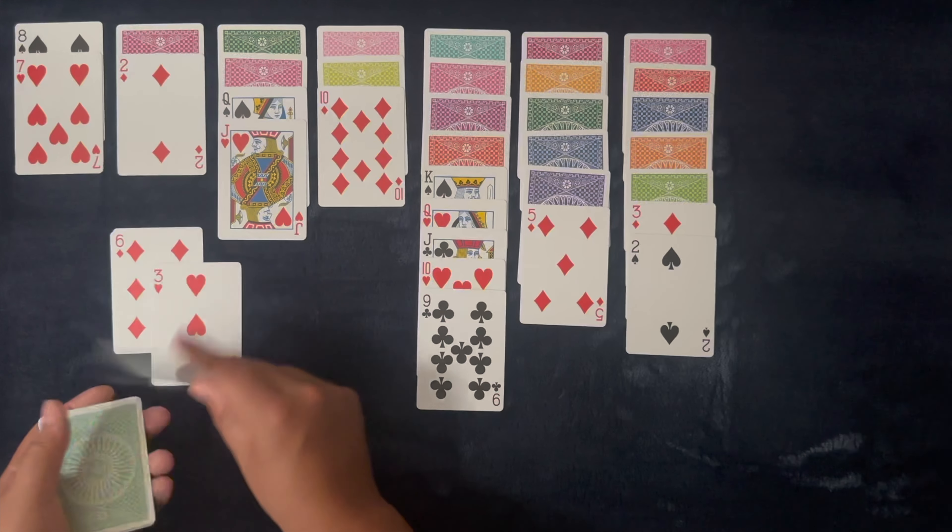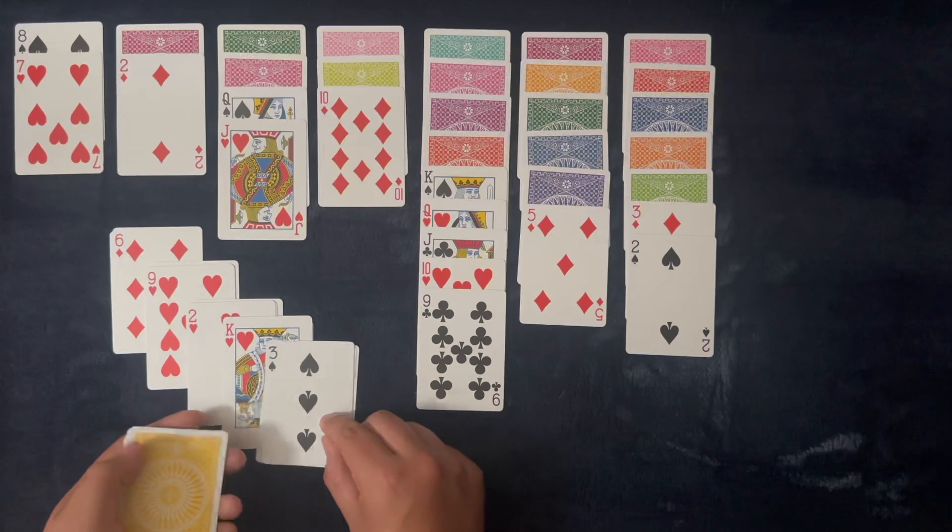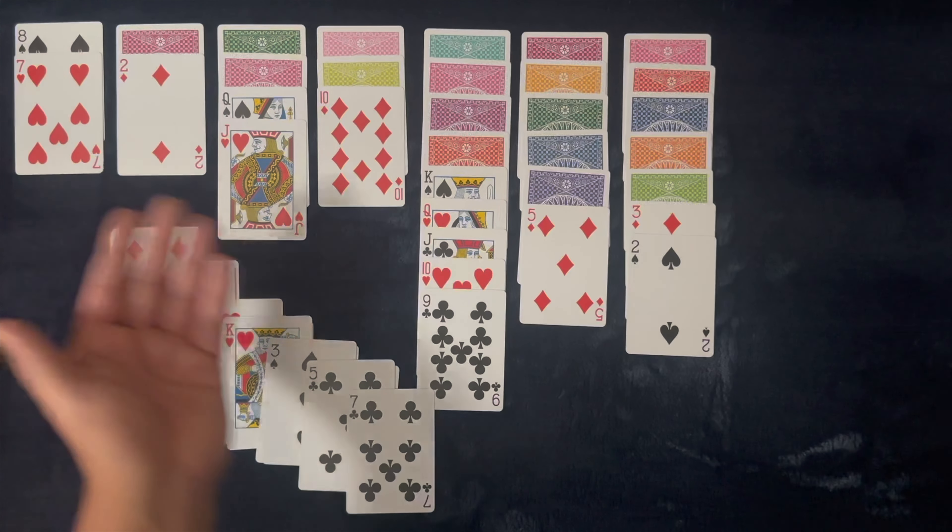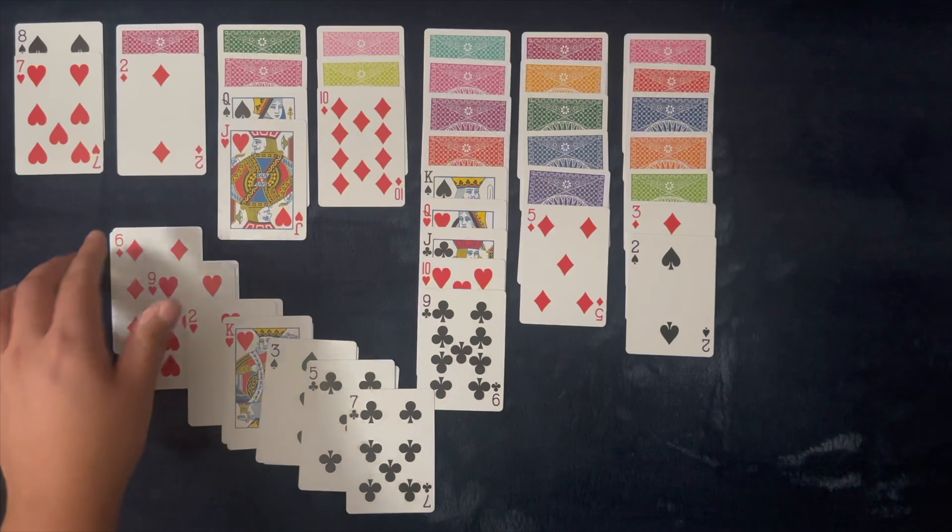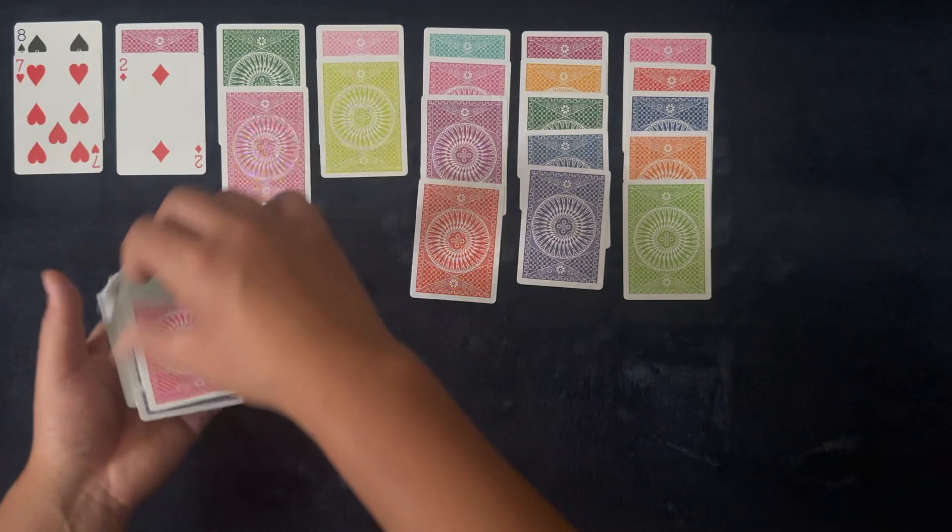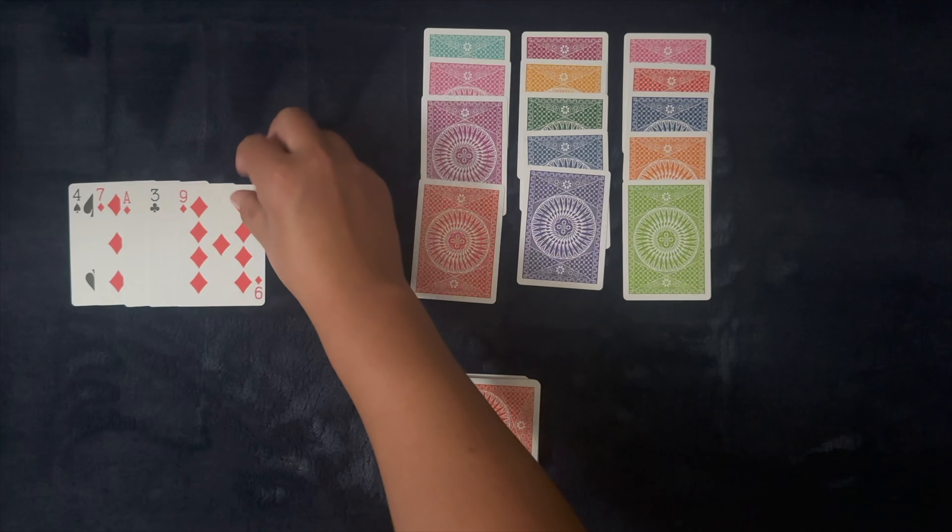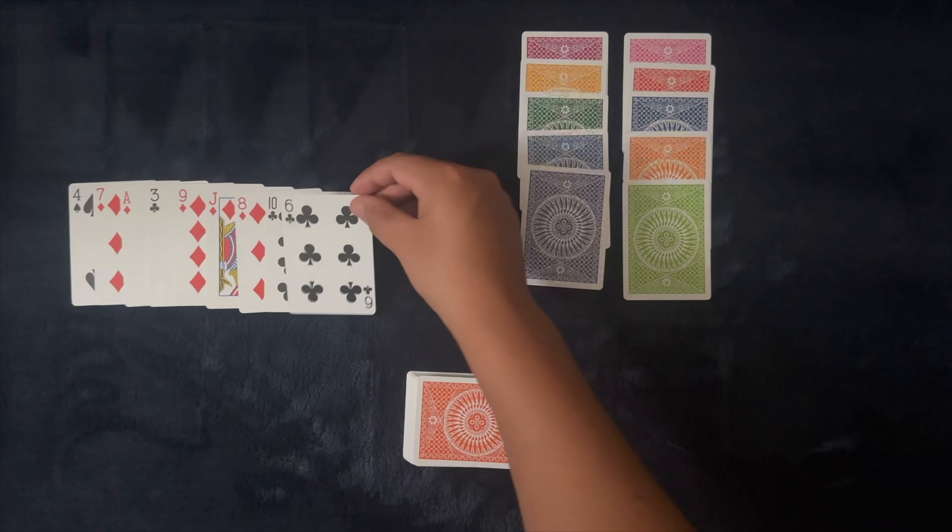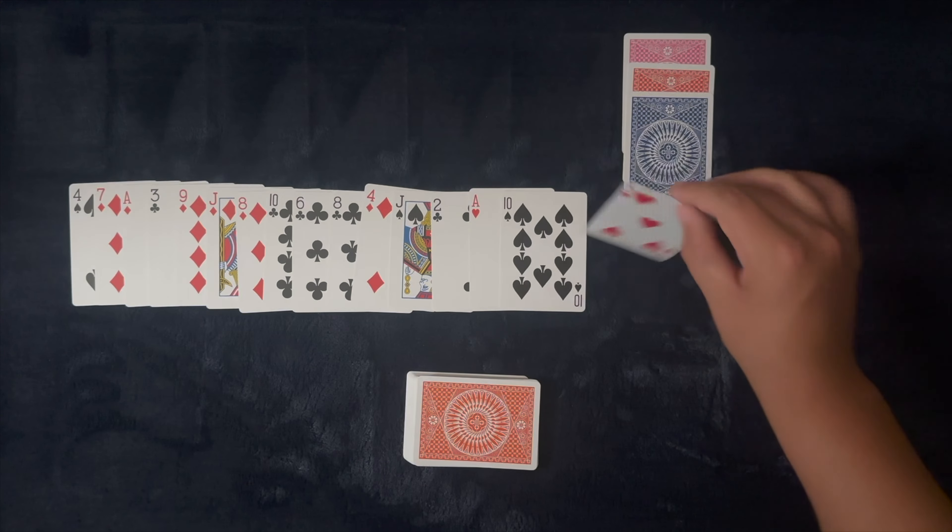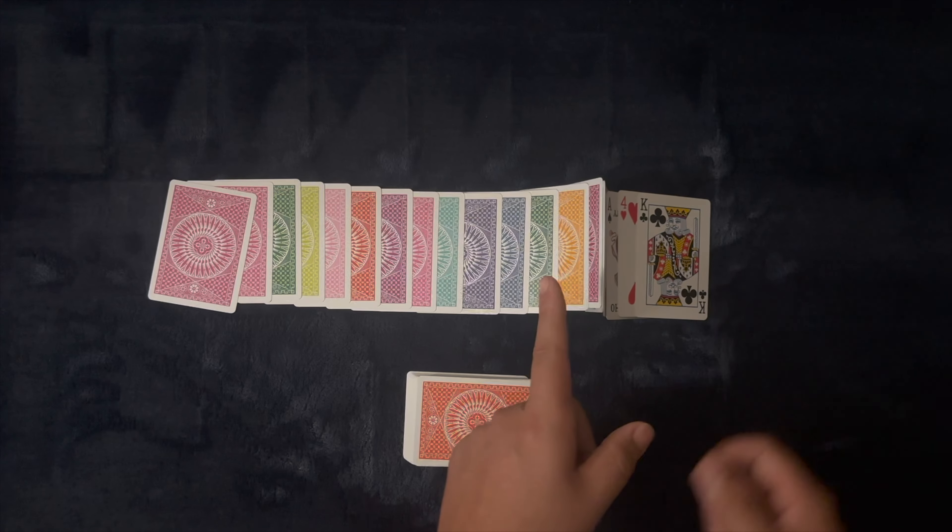Double eights, double fours, double jacks, double aces, double tens, triple aces, triple fours, and that is it. Magic, talk to you later. Six, three, five, seven, eight, ten.